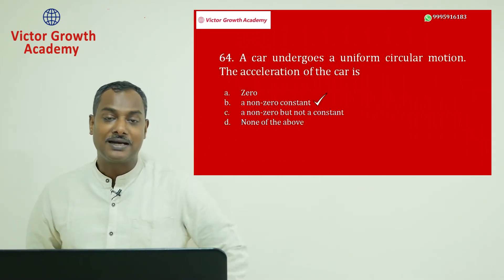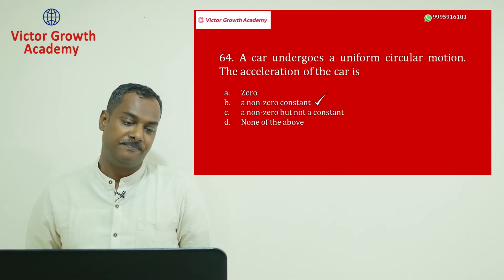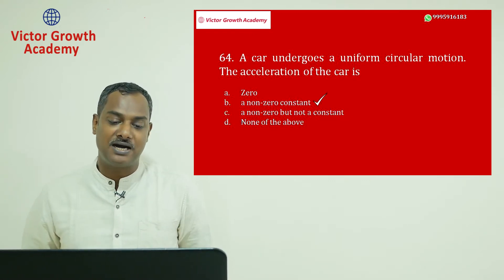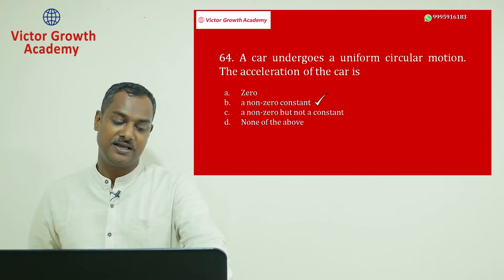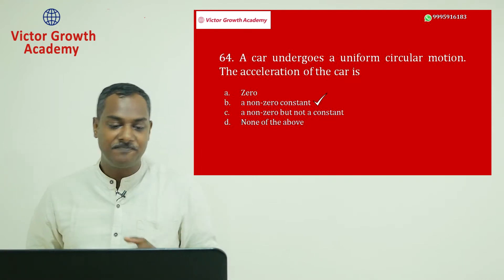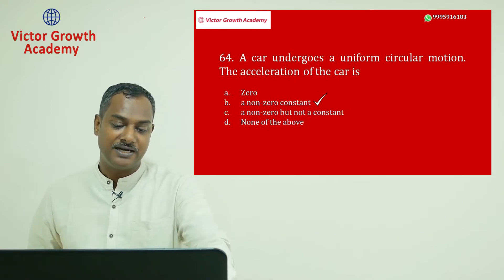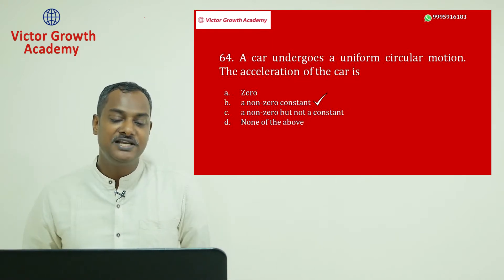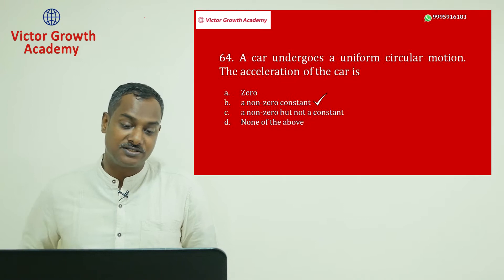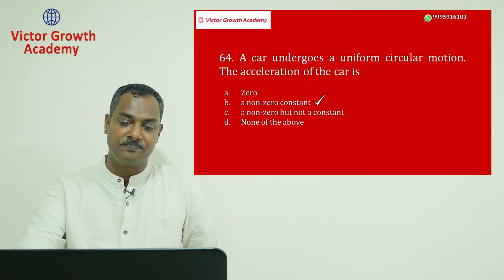Question number 64: a car undergoes uniform circular motion — what is the acceleration of the car? The answer is B: non-zero constant. It is constant, but it cannot be zero.